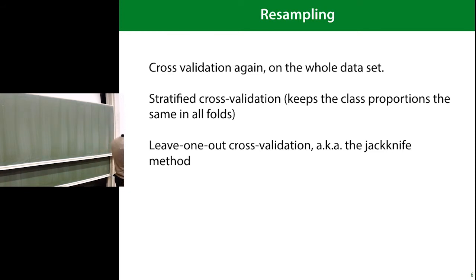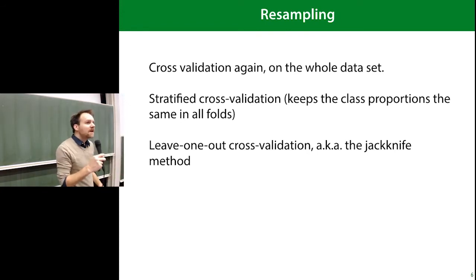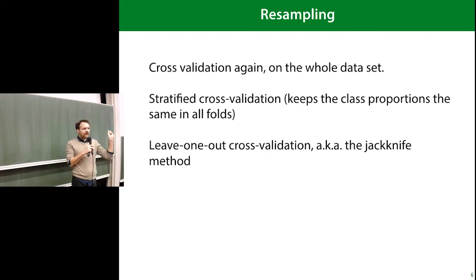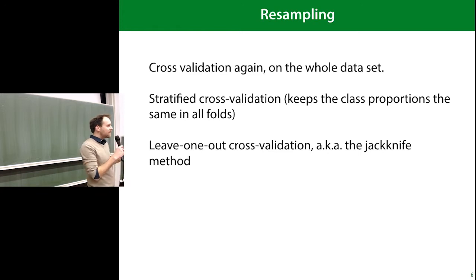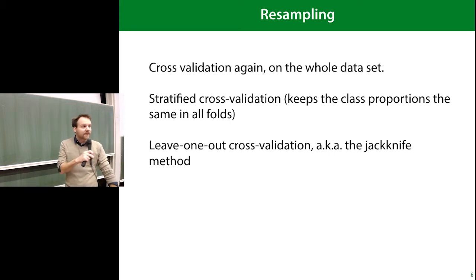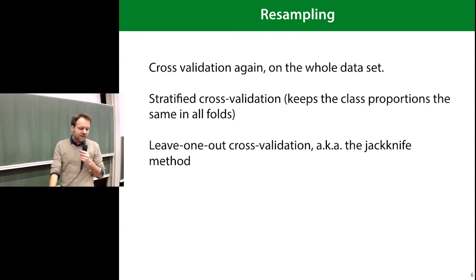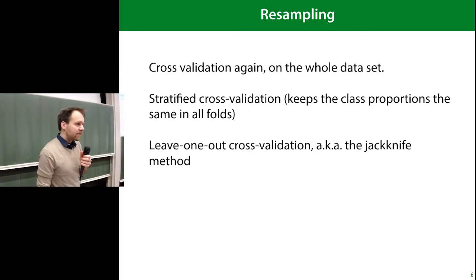There's stratified cross-validation where you can tweak it so the class proportion stays the same in all folds, which usually gives better results. If you have a very fast algorithm, you can do an extreme form of cross-validation where your validation set is only one example — you test on the whole rest of your data for every example. If you have a hundred examples, you do a hundred runs leaving only one example out each run, then average the classification error. This is fine if your algorithm is fast, but usually not applicable.